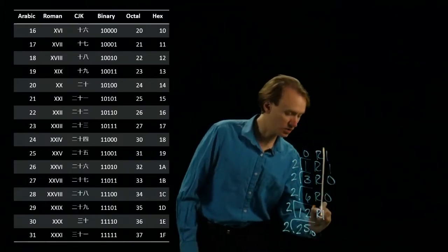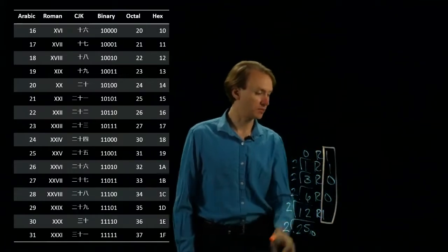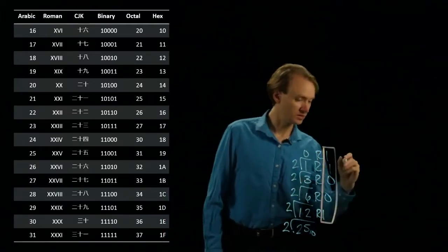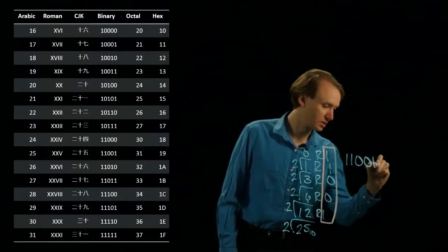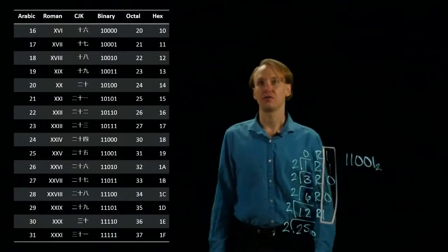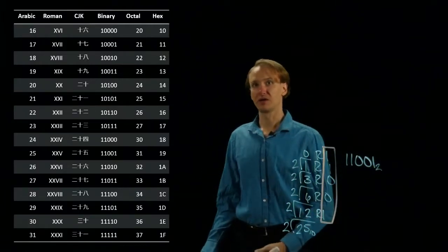Now I can take and read my number from top to bottom and see that I get 11001 in base 2. And if I look over the line for 25, that is what I get.